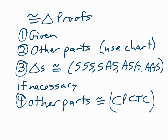Anytime you're proving triangles congruent, start with what you're given. Then mark the other parts congruent — use that chart as a guide. Are there any shared sides congruent to themselves, vertical angles, or alternate interior angles? Get all the remaining parts that give you enough information to say the triangles are congruent, then state congruence with SSS, SAS, ASA, or AAS. If they wanted you to prove triangles congruent, you can stop there. But if they want you to prove parts congruent, take it one step further and say those parts are congruent because corresponding parts of congruent triangles are congruent.